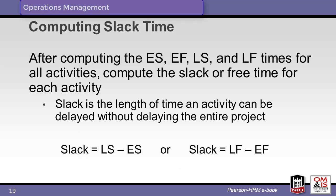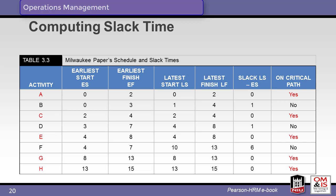We now transition to a discussion on slack time. Slack is the length of time an activity can be delayed without impacting the overall project. We see the formulas for slack. Remember that an activity without slack is on the critical path. Table 3.3 displays the summary of the starts, finishes, and slack for each activity along with whether the activity is on the critical path. Note that five of the eight activities are on the critical path.